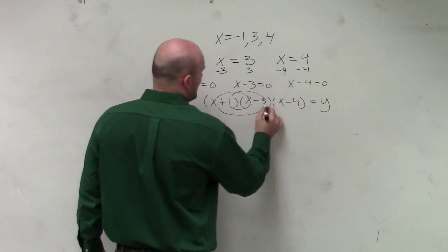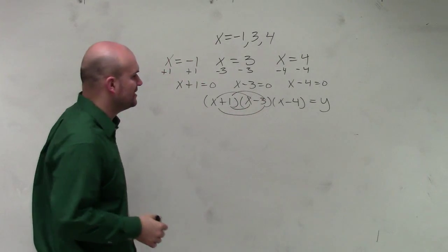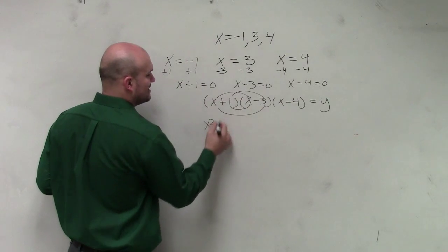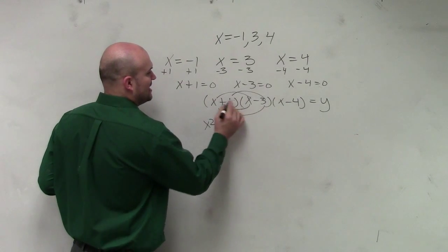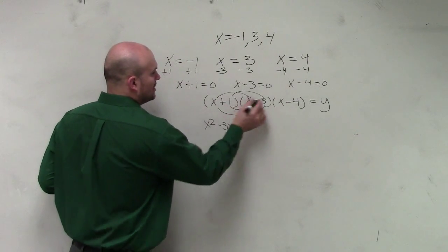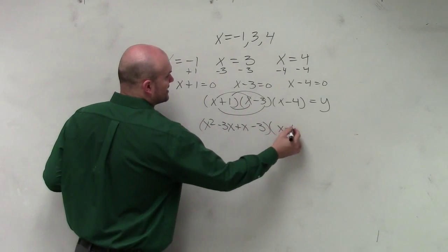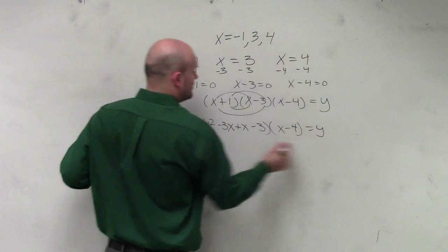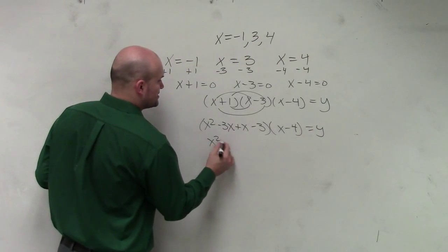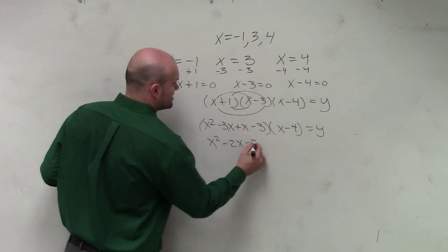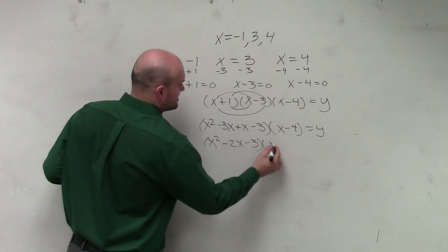I'm going to do the distributed property for the first one, and then I'll do the box method for the next. So x times x is x squared, x times negative 3 is negative 3x, x times 1 is x, 1 times negative 3 is negative 3. So that times x minus 4 equals y. I can simplify that: x squared minus 2x minus 3 times x minus 4.